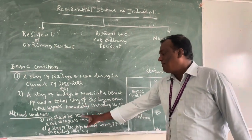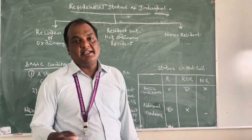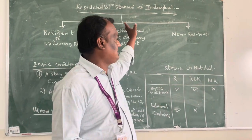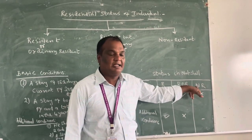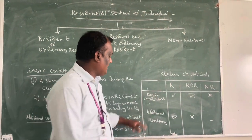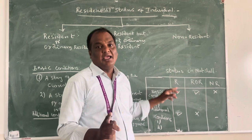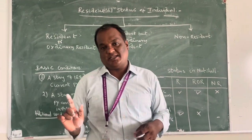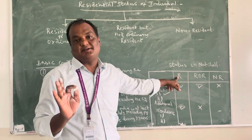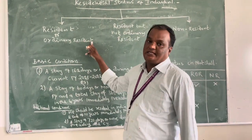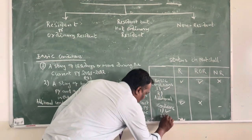Based on these basic and additional conditions, we can easily determine whether a person is a Resident, Resident but Not Ordinary Resident, or Non-Resident. A person fulfilling any one of the basic conditions is called a Resident. Ordinary Resident means a person fulfilling any one of the basic conditions and also satisfying both additional conditions.